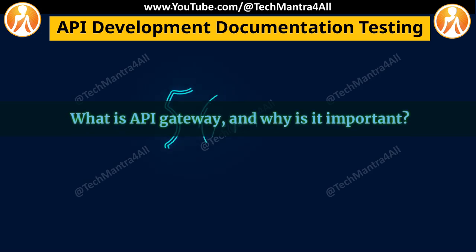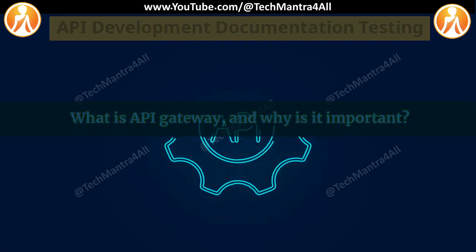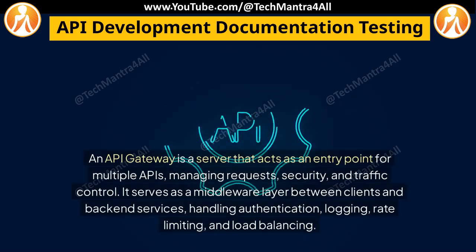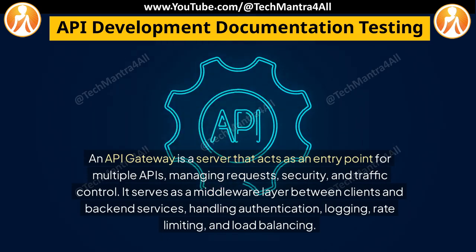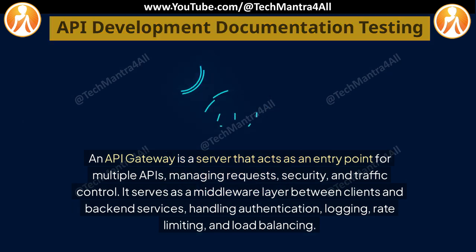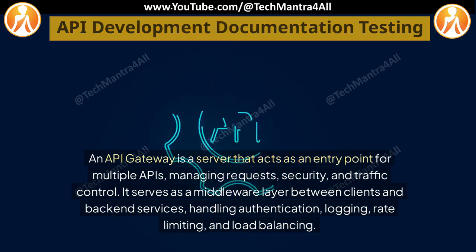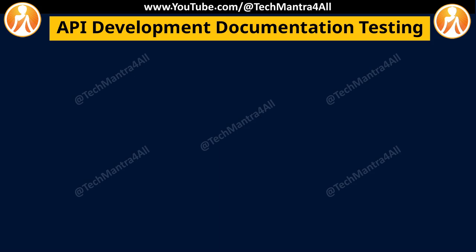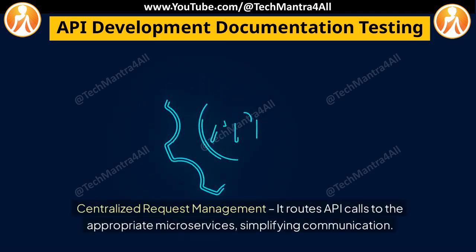What is an API Gateway, and why is it important? An API Gateway is a server that acts as an entry point for multiple APIs, managing requests, security, and traffic control. It serves as a middleware layer between clients and backend services, handling authentication, logging, rate limiting, and load balancing. An API Gateway is important for the following reasons — starting with centralized request management.